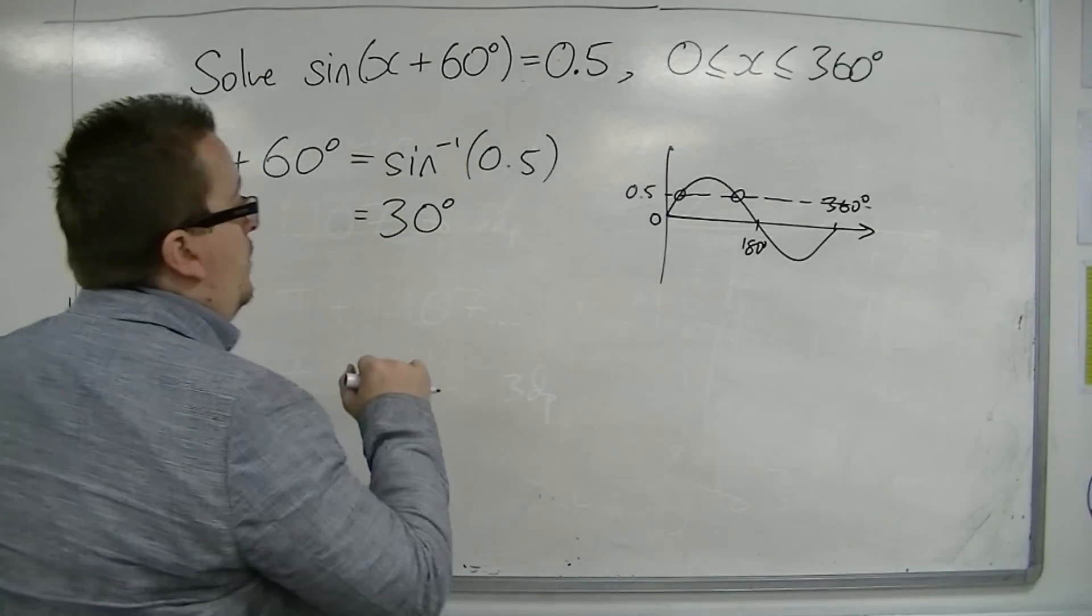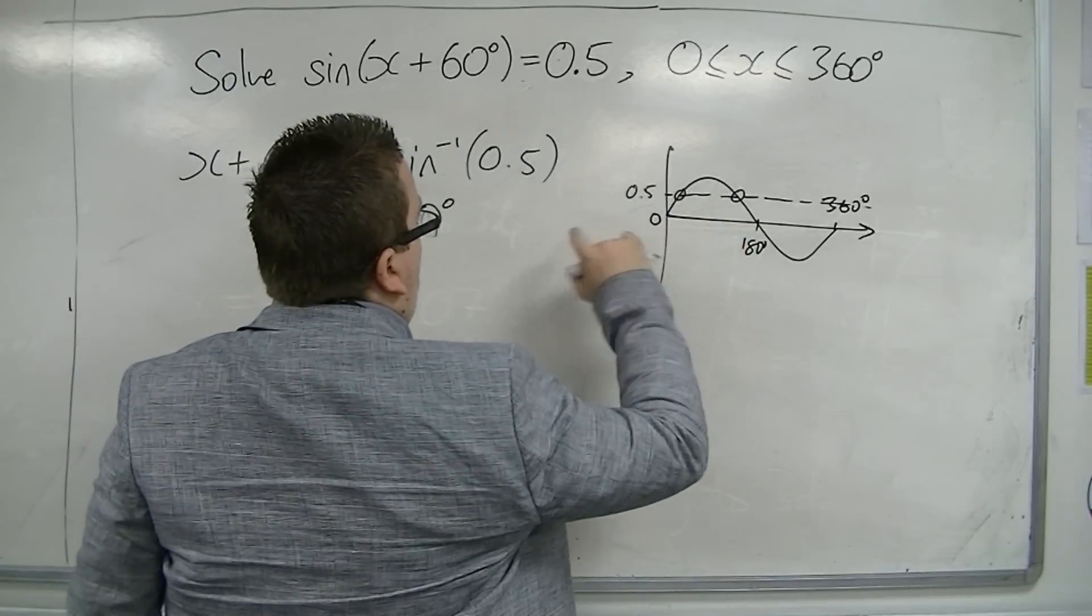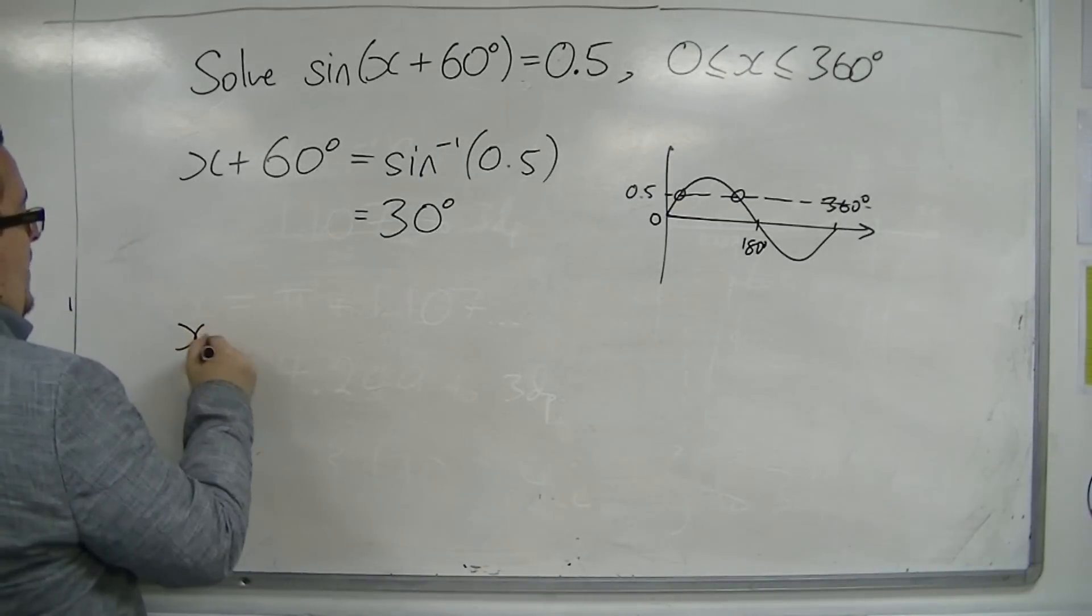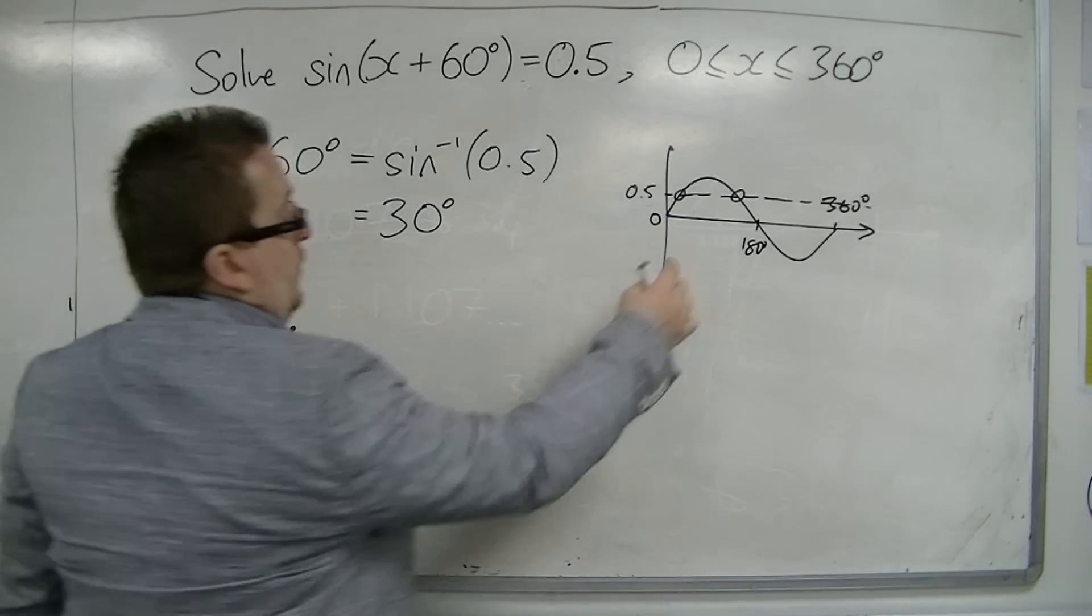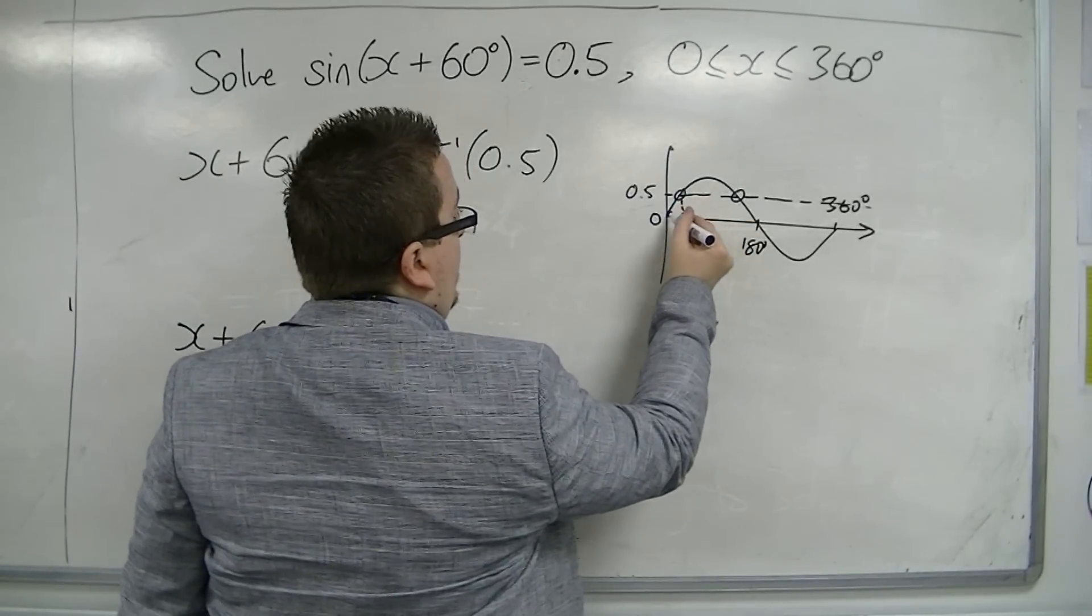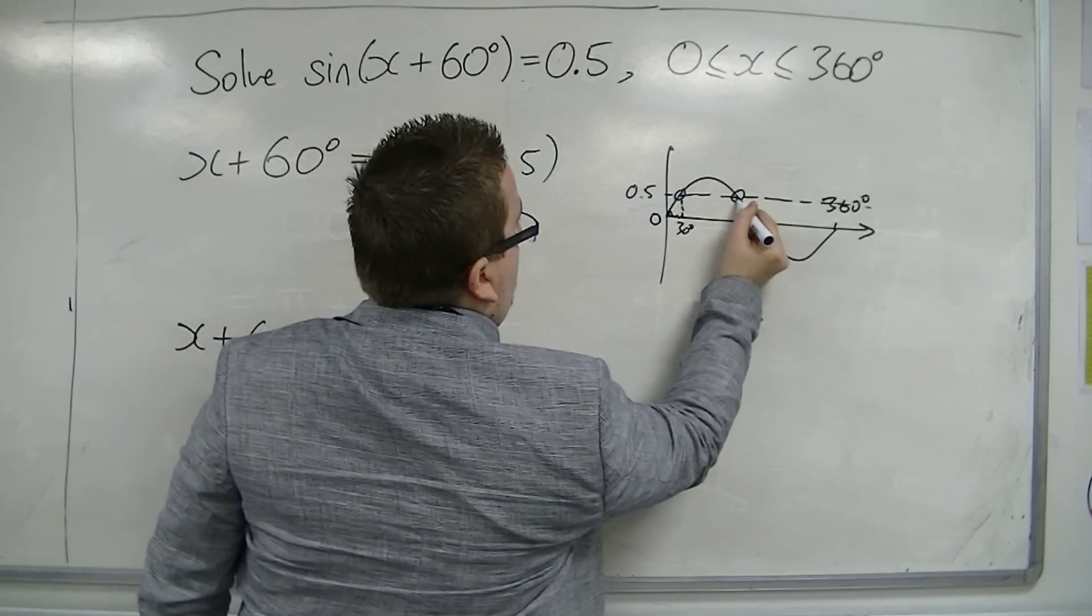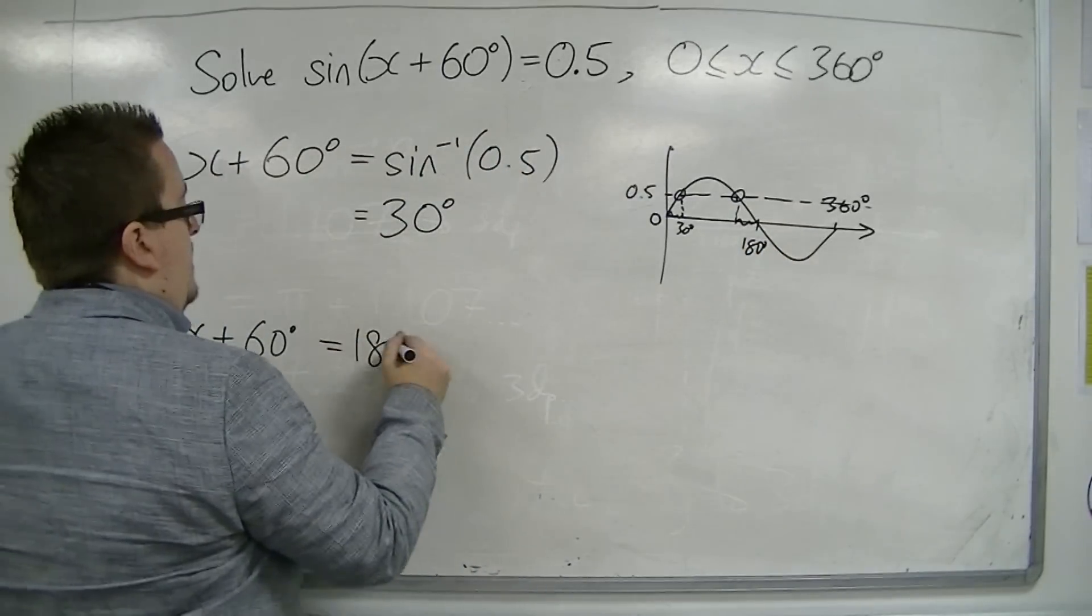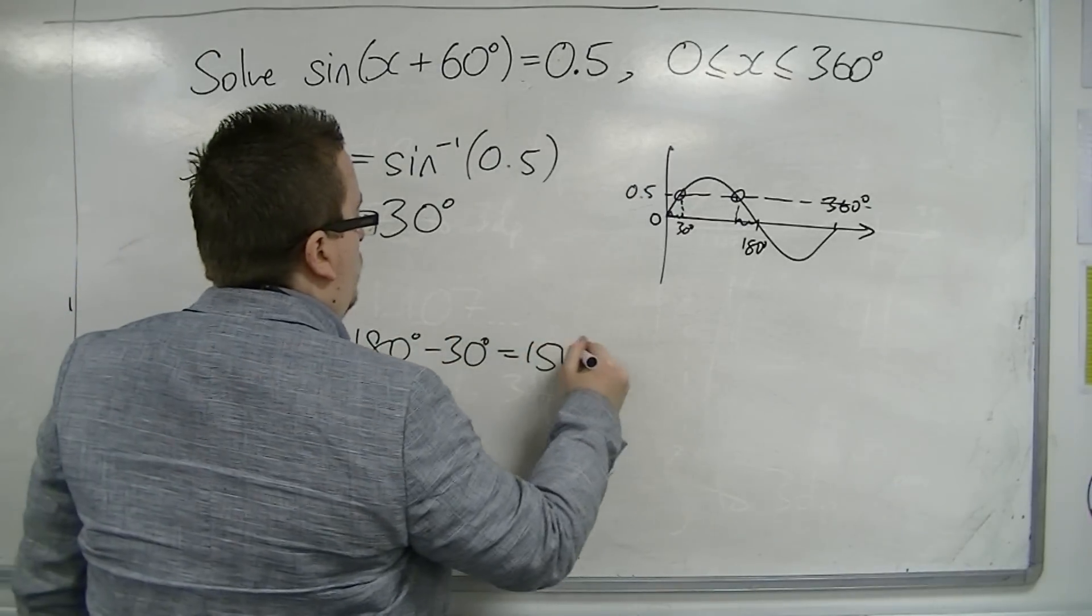And I'm also going to be looking for this other solution. So I'm also going to have x plus 60 is equal to, well if that's 30, then that distance is 30, which means that that distance is also 30. So it's 180 take away 30, which is 150 degrees.